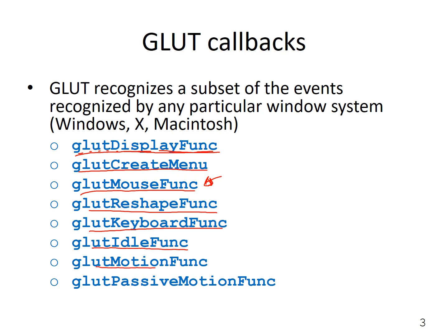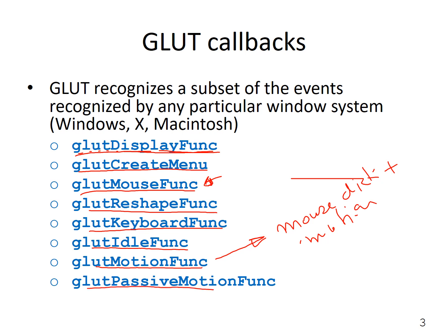GlutMotion function relates to mouse motion when a button is clicked — so this is mouse click plus motion. On the other hand, GlutPassiveMotion identifies a callback function that will get executed if the mouse is moved without clicking down any button.